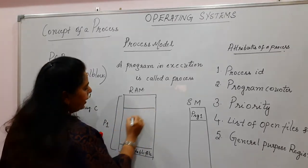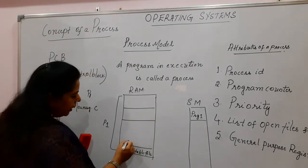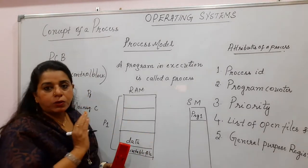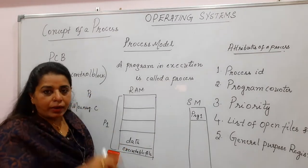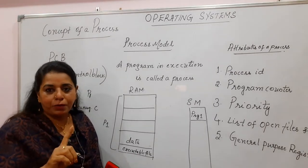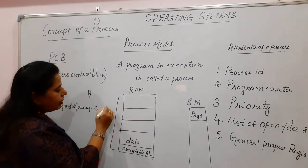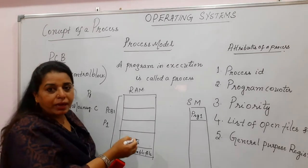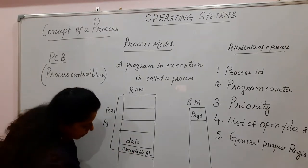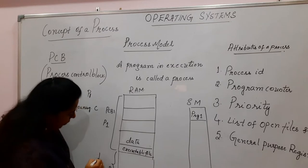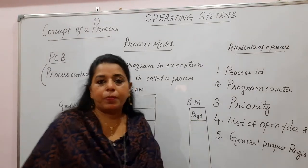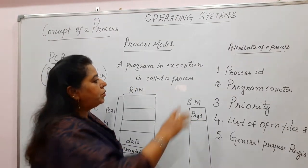Some space is kept as a stack, some for the heap, and then there is the data part of the program. All these things required for the process are stored in the main memory. That particular address space is called the Process Control Block, or PCB. For every process there is one PCB — for P1 it is PCB1, for P2 it is PCB2. All static variables, global variables, and the different attributes of a process are stored in the PCB.